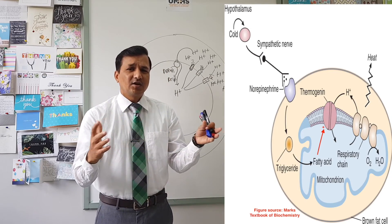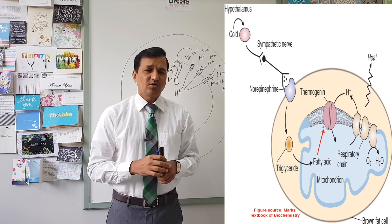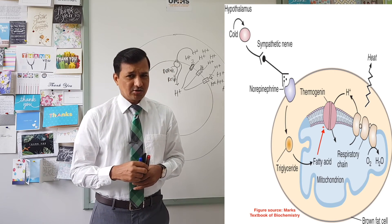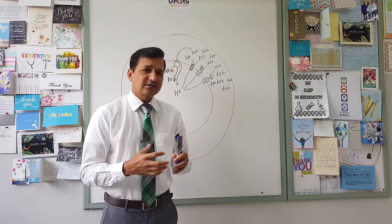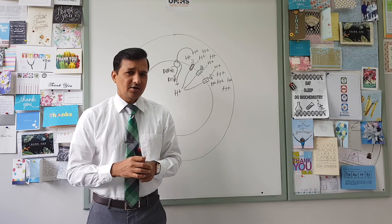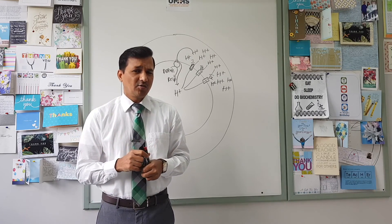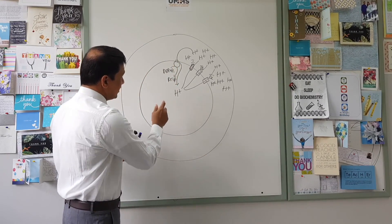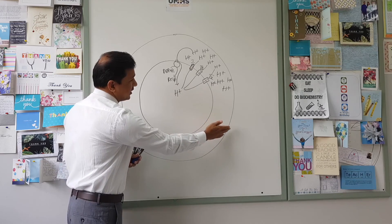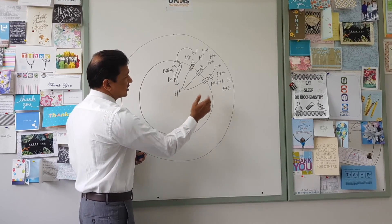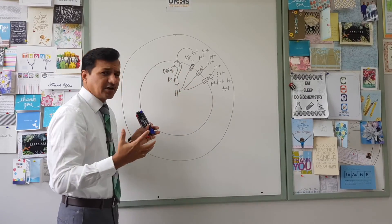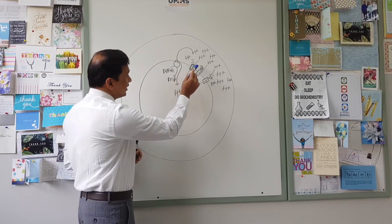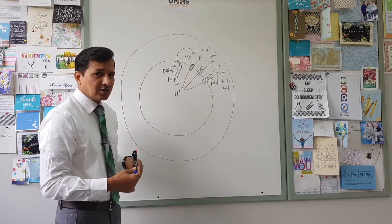The free fatty acids open up the thermogenin, and when thermogenin is opened, it allows flow of protons into the matrix of the mitochondria. To understand how cold helps in non-shivering thermogenesis, we need to understand a little about the electron transport chain. Here I have drawn the inner mitochondrial membrane, the outer mitochondrial membrane, and the intermembrane space. All cells with mitochondria have an electron transport chain, and there are three complexes acting as pumps.